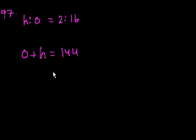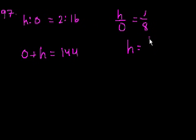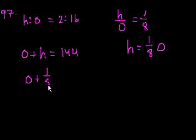The ratio of hydrogen to oxygen is 2 to 16, or 1/8. So hydrogen over oxygen equals 1/8, meaning hydrogen equals 1/8 of oxygen. Substituting: oxygen plus 1/8 oxygen equals 144.